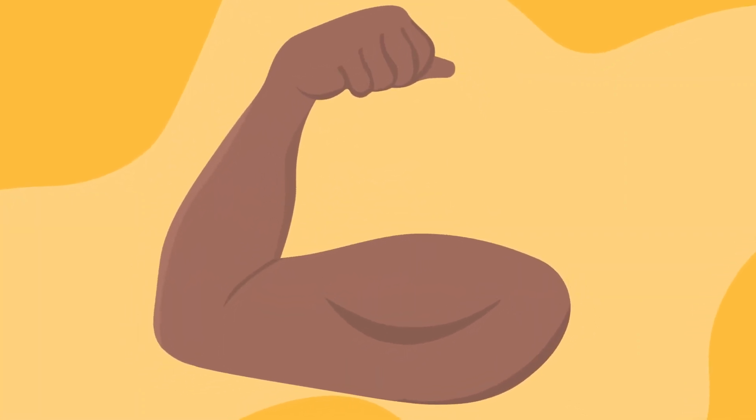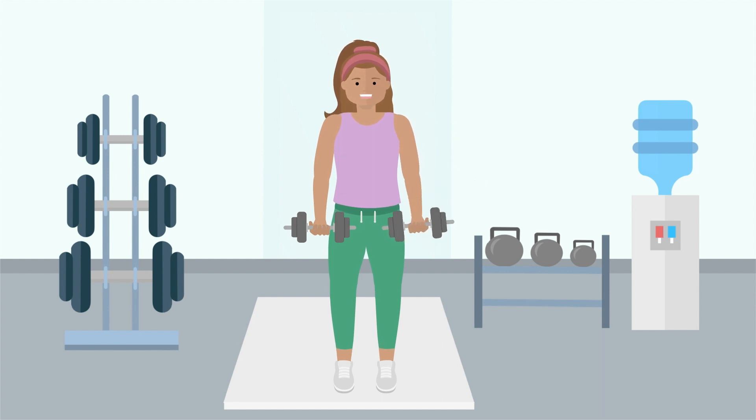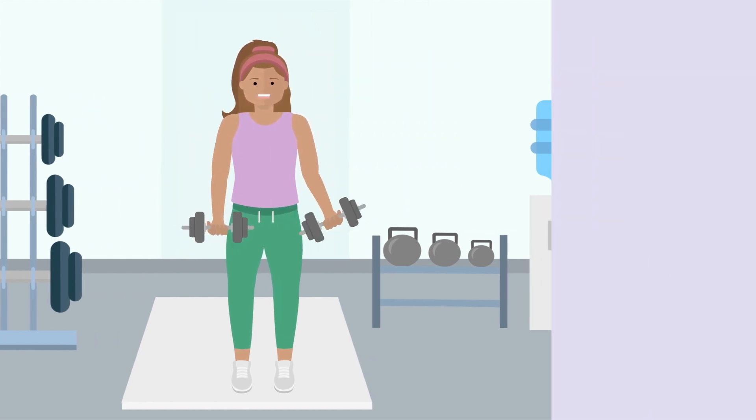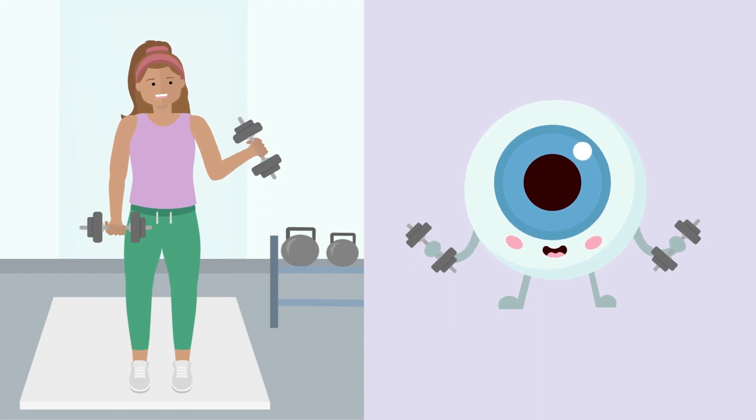When we talk about flexing muscles, most people think about pumping iron in the gym to build their biceps. But did you know that the muscles of your eyeball are also constantly working out to keep your vision perfect?